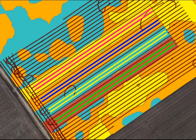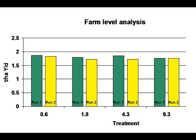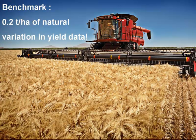Once we have the raw data for the whole run averages, we can graph them and start to look if there's a difference between each treatment. There appears to be no significant differences between treatments on a whole trial basis here. Keep in mind we're using that benchmark we set earlier of that run variation, which appears to be around about 200 kg per hectare.